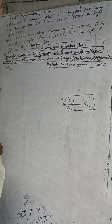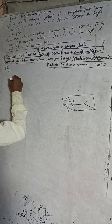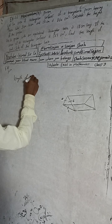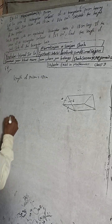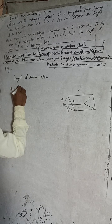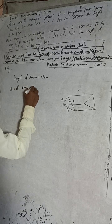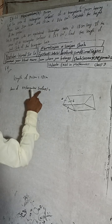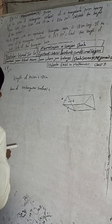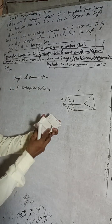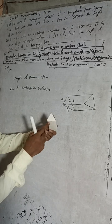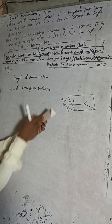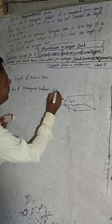Now we will find the solution. Given: the length of the prism — length or height of the prism — is equal to 18 cm. The area of rectangular surfaces is equal to 567 cm².